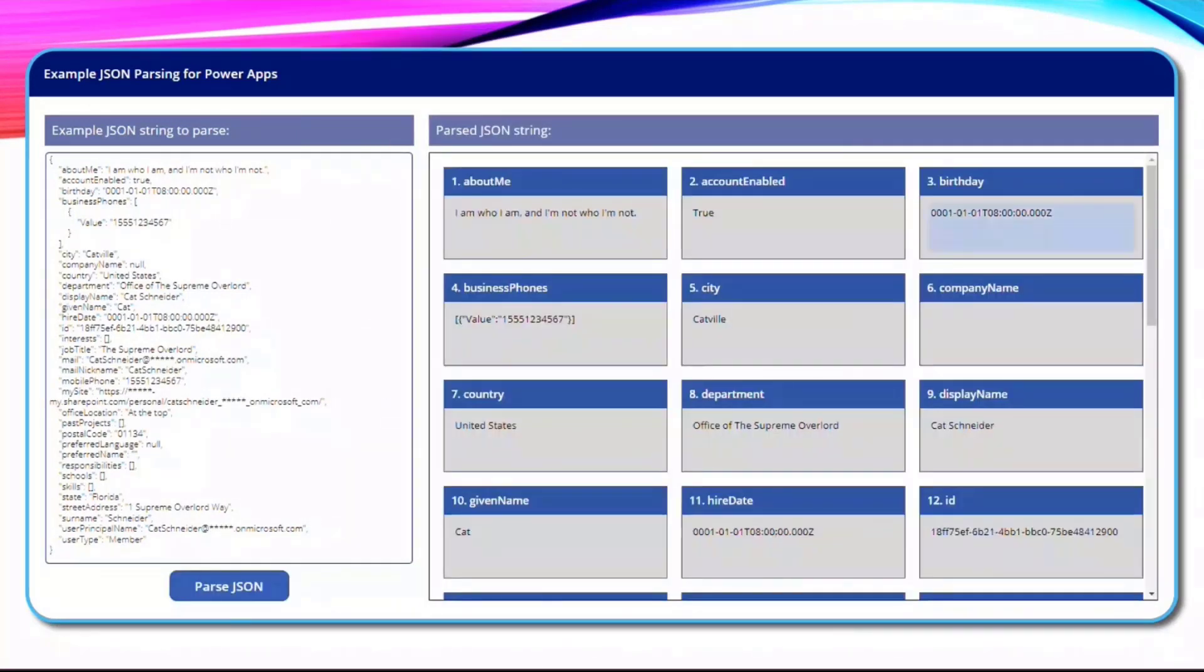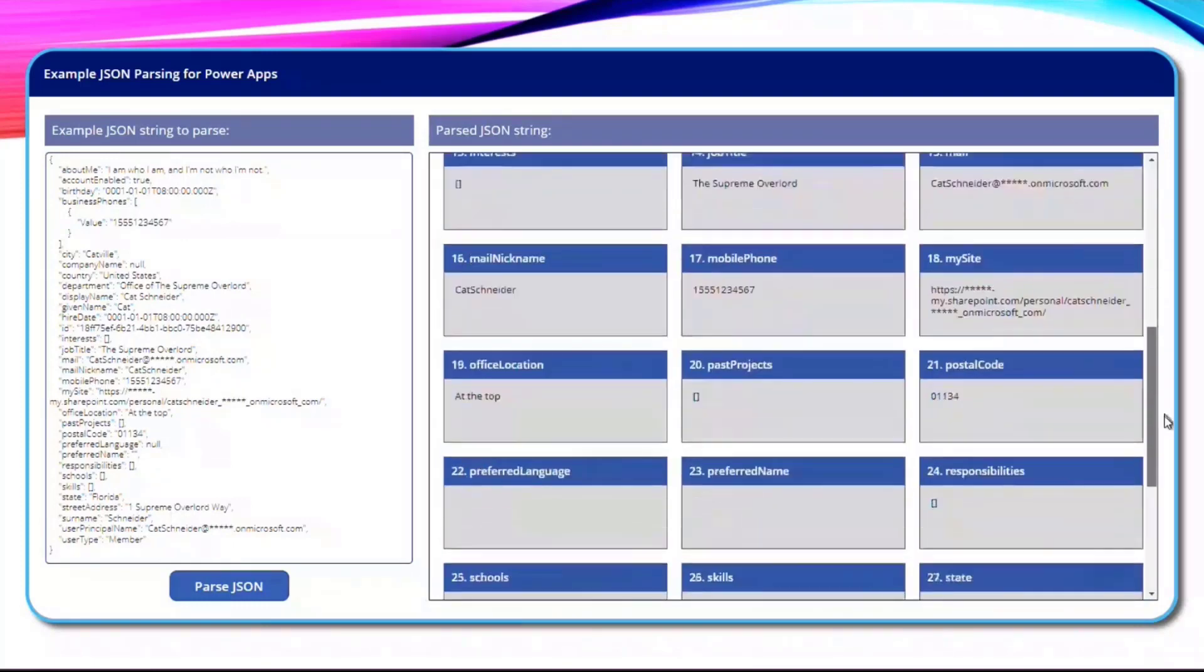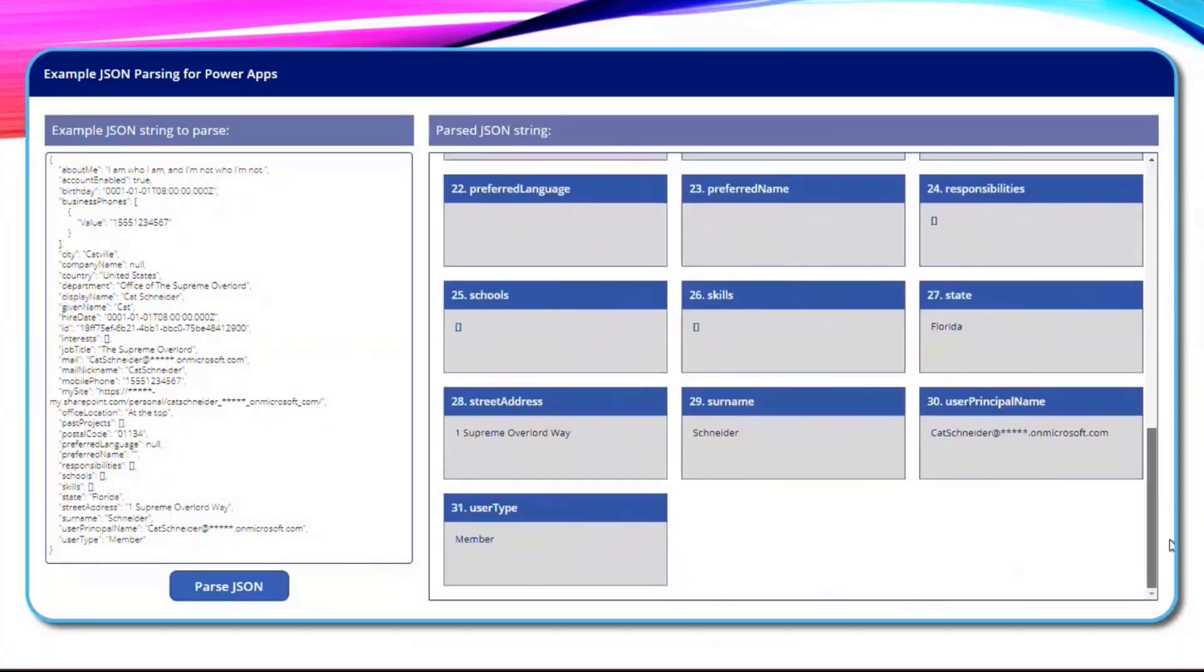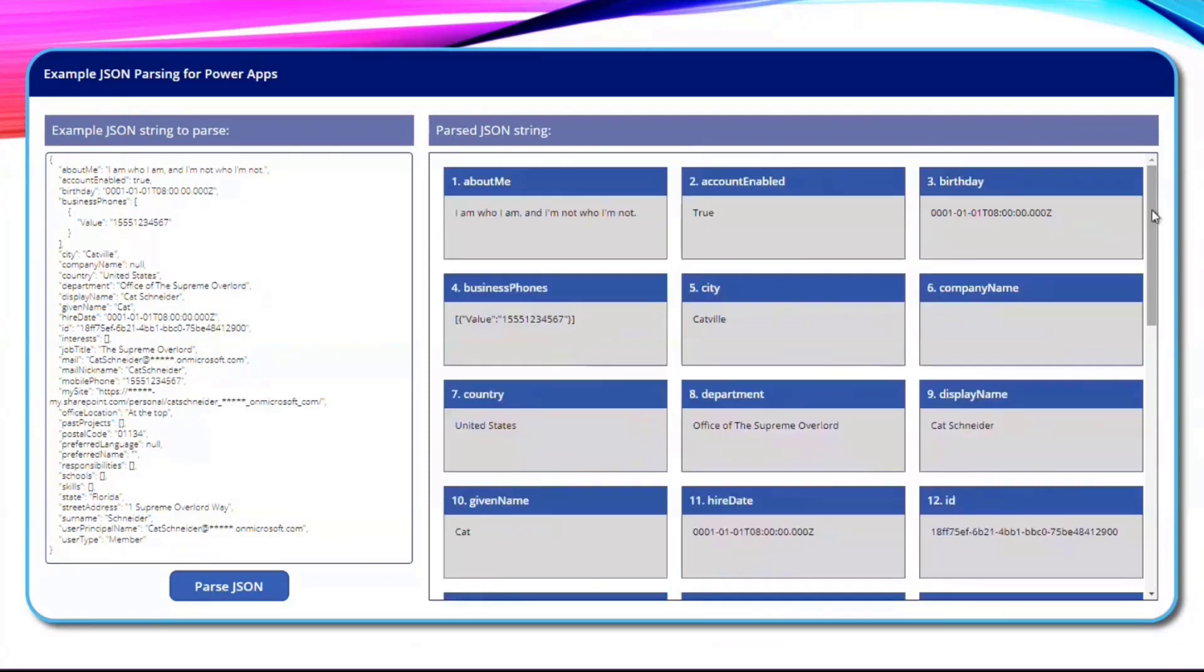Once I did that, I was able to put all of those key value pairs into a gallery that allowed me to see all of those values, and then I could actually go back in there and make changes to those values, which I could eventually use that to push back.